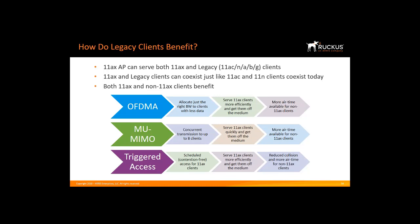11ax uses the fast lanes, and 11ac devices have fewer clients to contend with, so they're happy, and since it's done more efficiently, they get more airtime. 11ax technologies — OFDMA, multi-user MIMO, triggered access, BSS color, long OFDM symbol, and 1024 QAM — serve 11ax clients in a much more efficient way, which clears up airtime for the legacy devices.